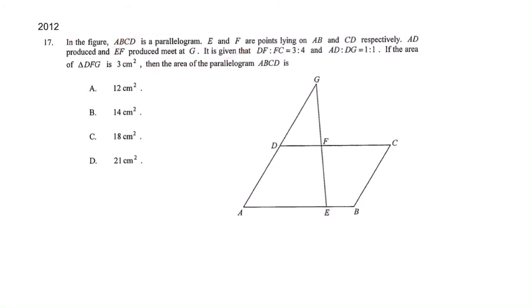So you have to read everything first of all. ABCD is a parallelogram, then DF to FC is 3 to 4, AD to DG is 1 to 1, and then we know the area of DFG is 3cm squared, and at last...